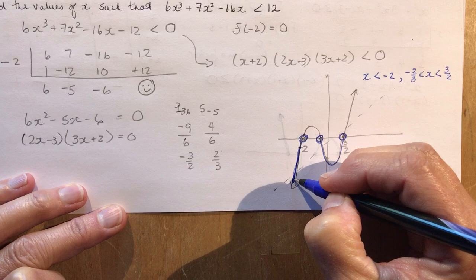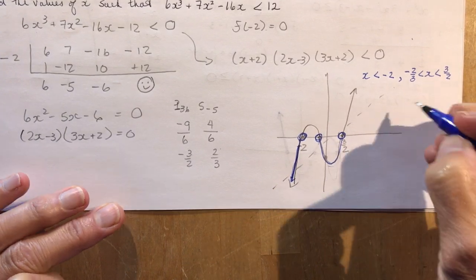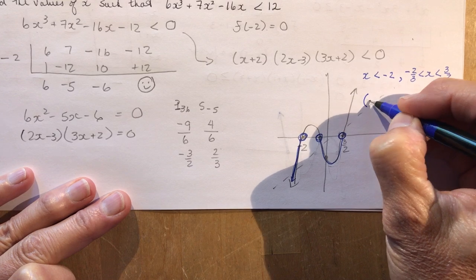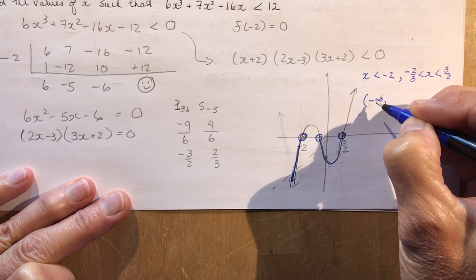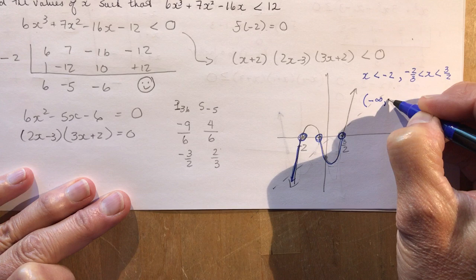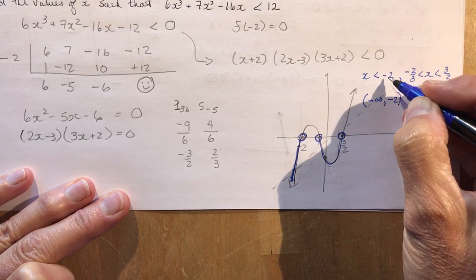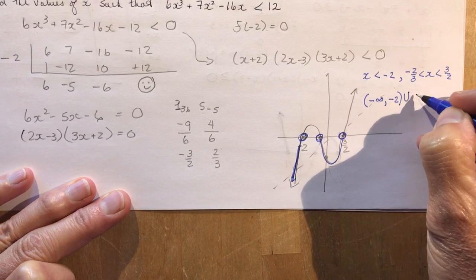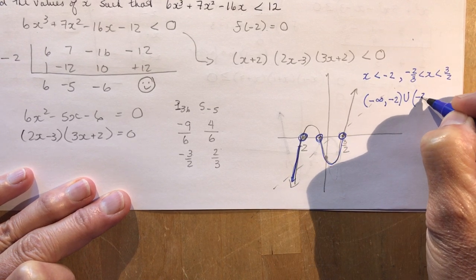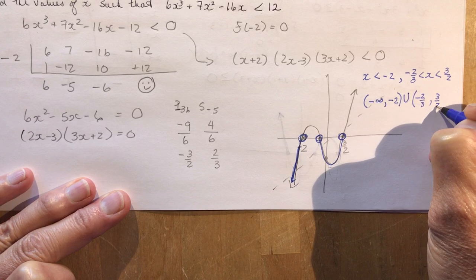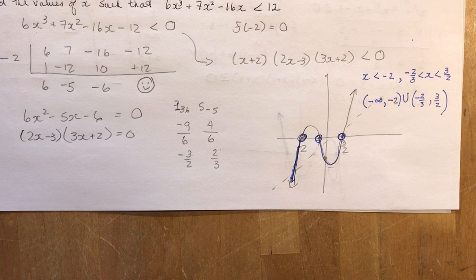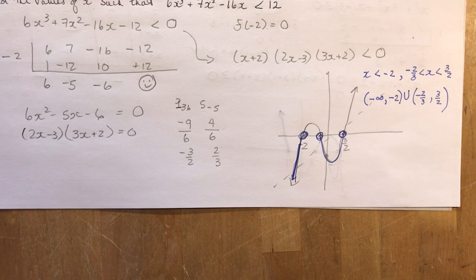In interval notation: x < −2 is written as (−∞, −2), then union ∪, then (−2/3, 3/2). That's how you would do this — it's not very difficult and with a little practice you can ace this. Have a good day, bye for now!